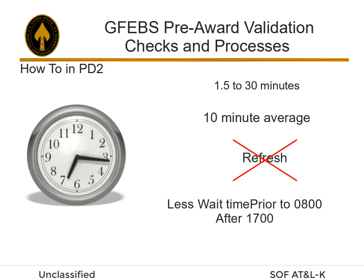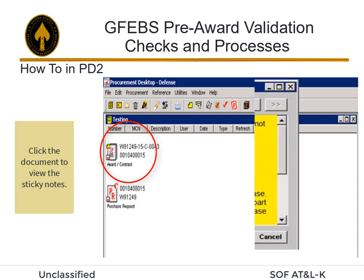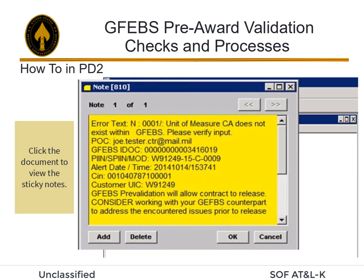You will also note that there are times when the response time is less. A sticky note is added to the document. To view the sticky note, simply click the document. This is what a sticky note looks like. It contains error text, GFIBS point of contact information, and a host of additional information that you may find useful.